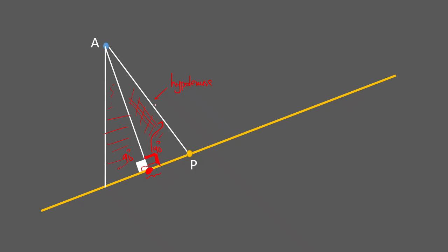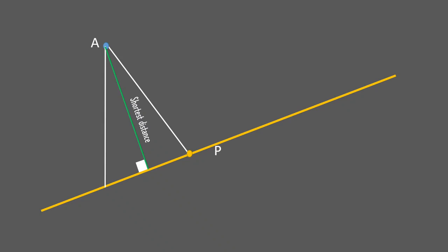The hypotenuse — call it distance one — is longer than the perpendicular distance two. Similarly, in the other triangle, distance three is greater than distance two. Any other line from A to the line will be longer than distance two. So the perpendicular from A to the line gives the shortest distance, and that point P is the foot of the perpendicular.